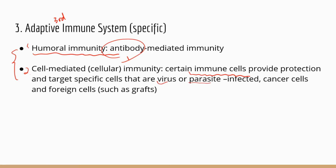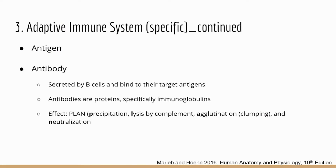Cell-mediated immunity can also protect us from cancer cells — it can try to kill cancer cells so that you don't have proliferation of cancer cells in your body, which leads to cancer. This type of immunity also targets foreign cells such as grafts, which are transplanted tissues. When you receive a transplant, the cells from another person are considered foreign because they're not from your own body, and they can also be the target of cell-mediated immunity.